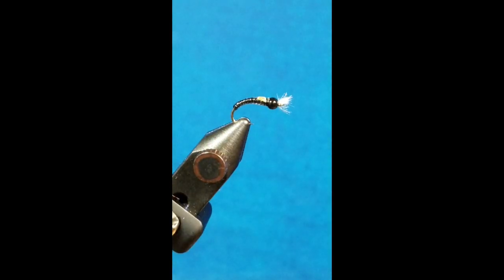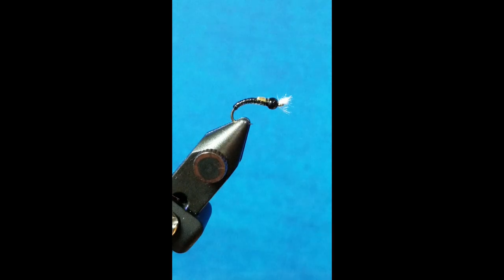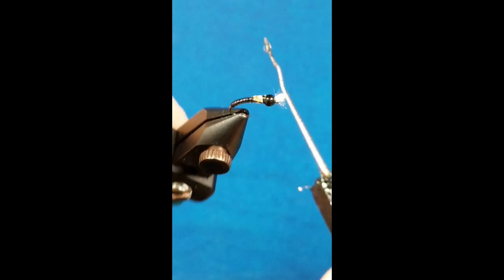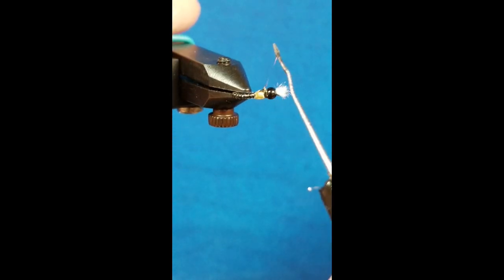Then for the UV material, I'm going to come in—I use just a bent, broken-off bodkin. Allows me just to work and move that UV around a little bit more. I don't want to stay on top of these wing buds.